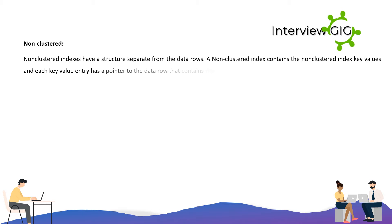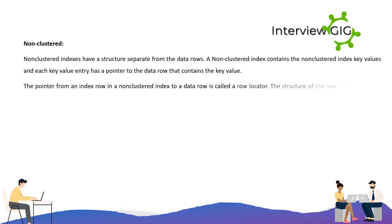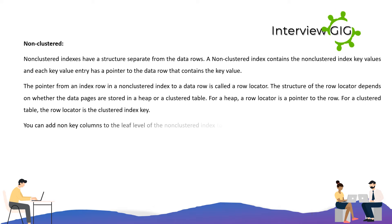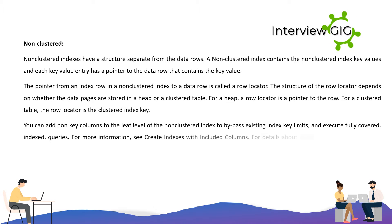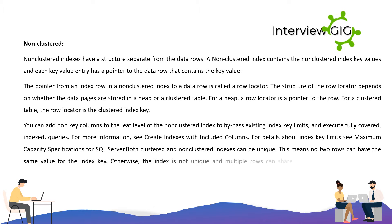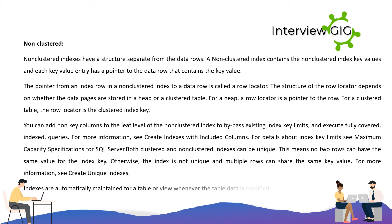Non-clustered indexes have a structure separate from the data rows. A non-clustered index contains the index key values, and each key value entry has a pointer to the data row — called a row locator. For a heap, the row locator is a pointer to the row; for a clustered table, the row locator is the clustered index key. You can add non-key columns to the leaf level to execute fully covered indexed queries. Both clustered and non-clustered indexes can be unique.